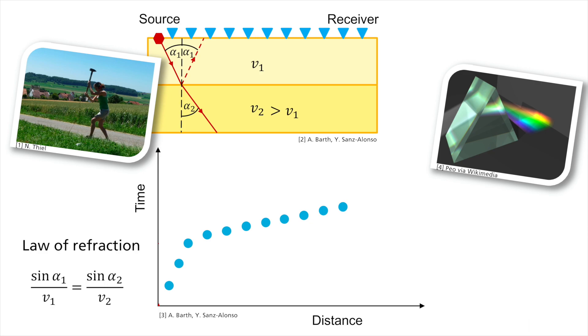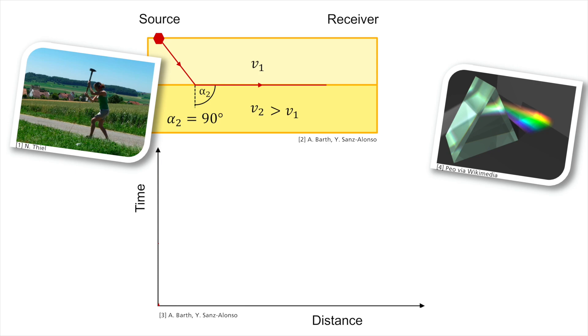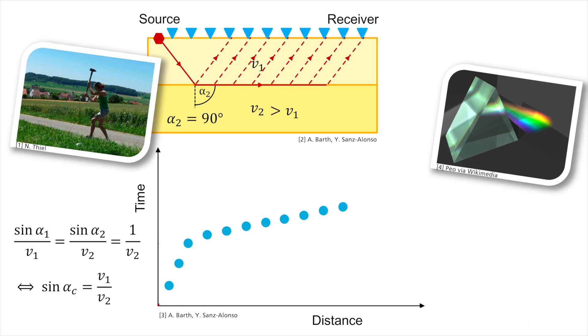If the wave has an incident angle such that alpha2 equals 90 degrees, the wave, or head wave, travels along the boundary between the two media at the higher velocity v2. Sine alpha1 divided by v1 then equals 1 divided by v2. In this case, the angle alpha1 is called the critical angle alphaC. Sine alphaC is then equal to v1 divided by v2. The measurement instruments placed at the surface will then register the waves reflected back up to the surface.